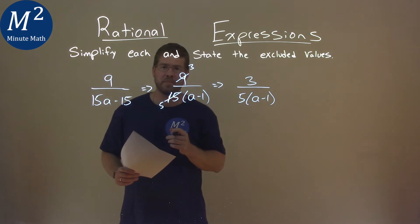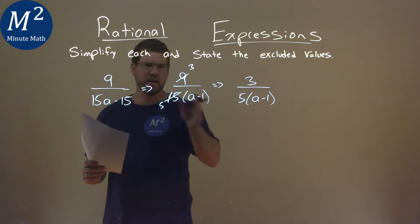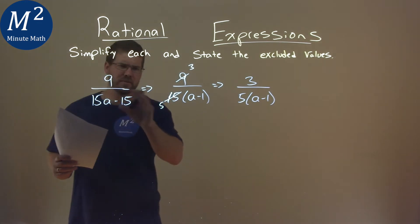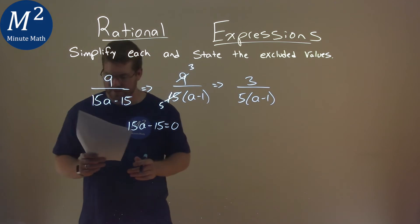But now we have to state the excluded value. So it's taking our denominator, which we know right here, or from the beginning, it doesn't really matter. Well, it does matter, but let's just grab from the beginning, a 15a minus 15. We're going to set it equal to 0.